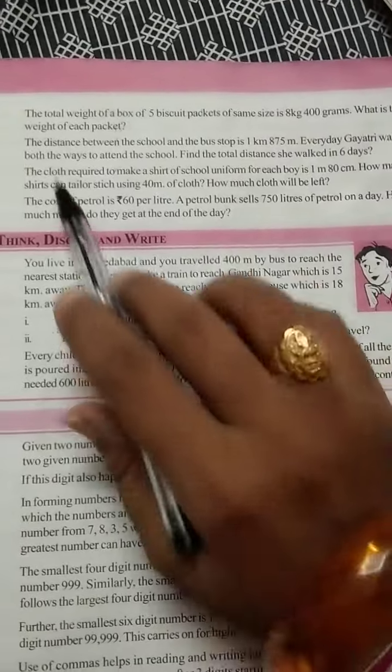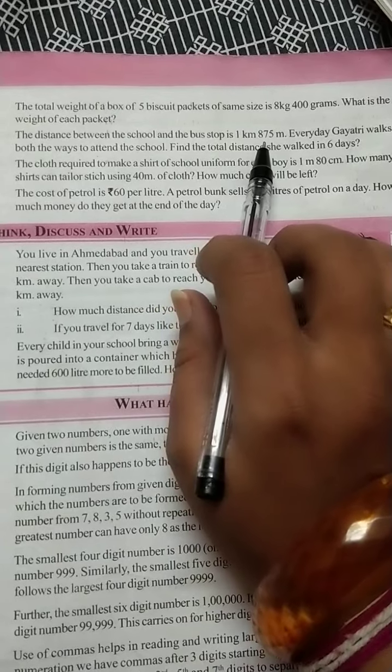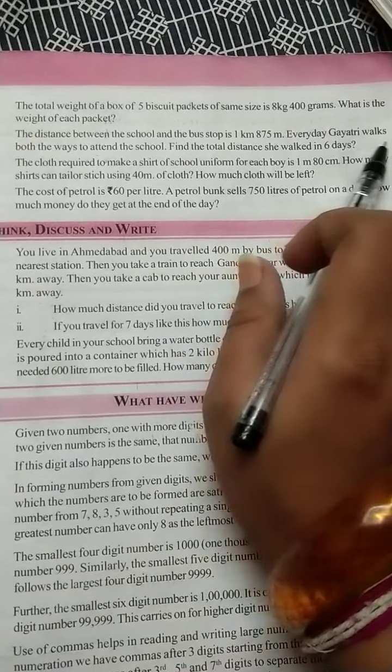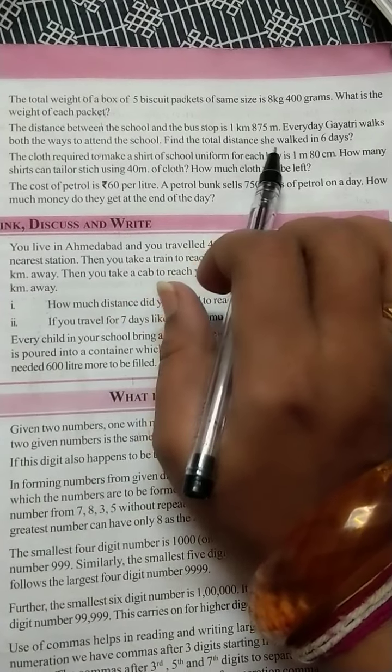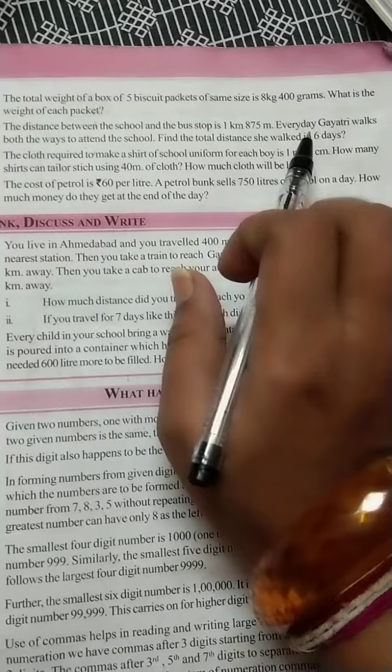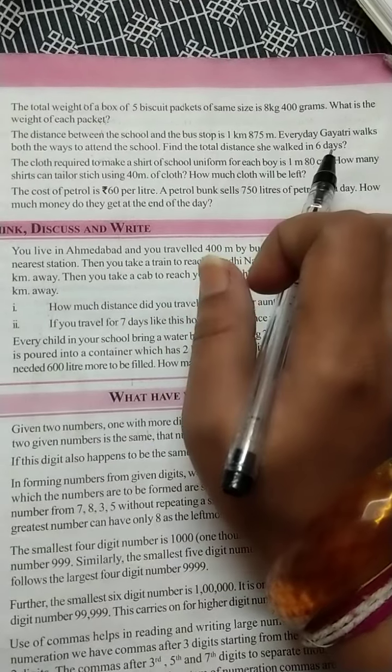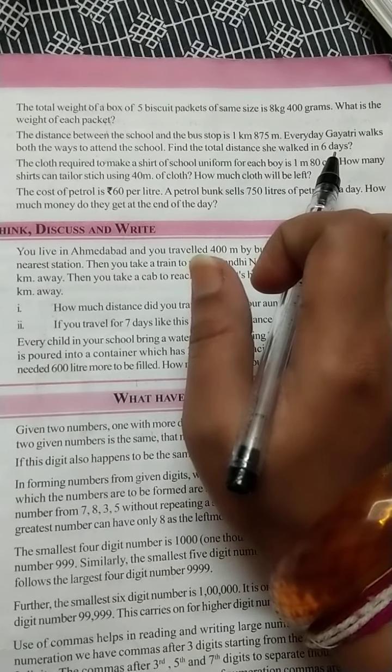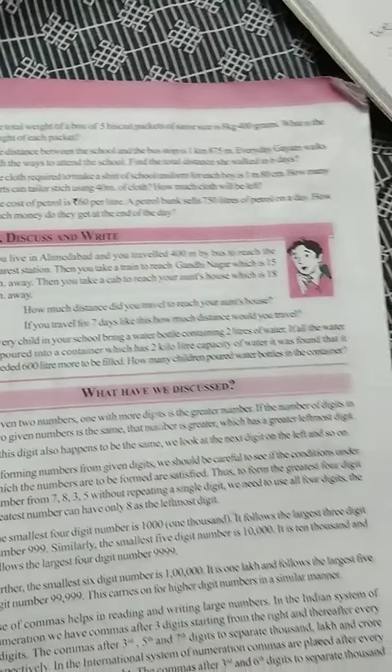See the 7th question. The distance between the school and the bus stop is 1 km 875 meters. Every day Gayathri walks both ways. Find the total distance she walked in 6 days.